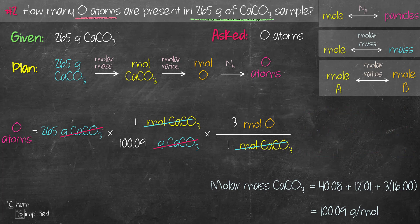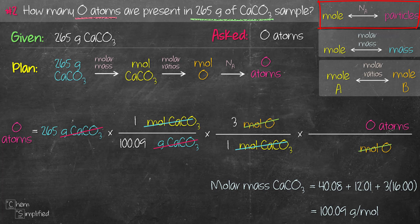For the last step, we convert from moles of oxygen to oxygen atoms. We multiply, draw a line across, place moles of oxygen at the bottom to cancel, and oxygen atoms on top. We use Avogadro's number: 6.022 × 10²³ oxygen atoms per mole. We place 1 in front of mole and 6.022 × 10²³ in front of oxygen atoms. Then we calculate: 265 ÷ 100.09 × 3 × 6.022 × 10²³ = 4.78 × 10²⁴ oxygen atoms.